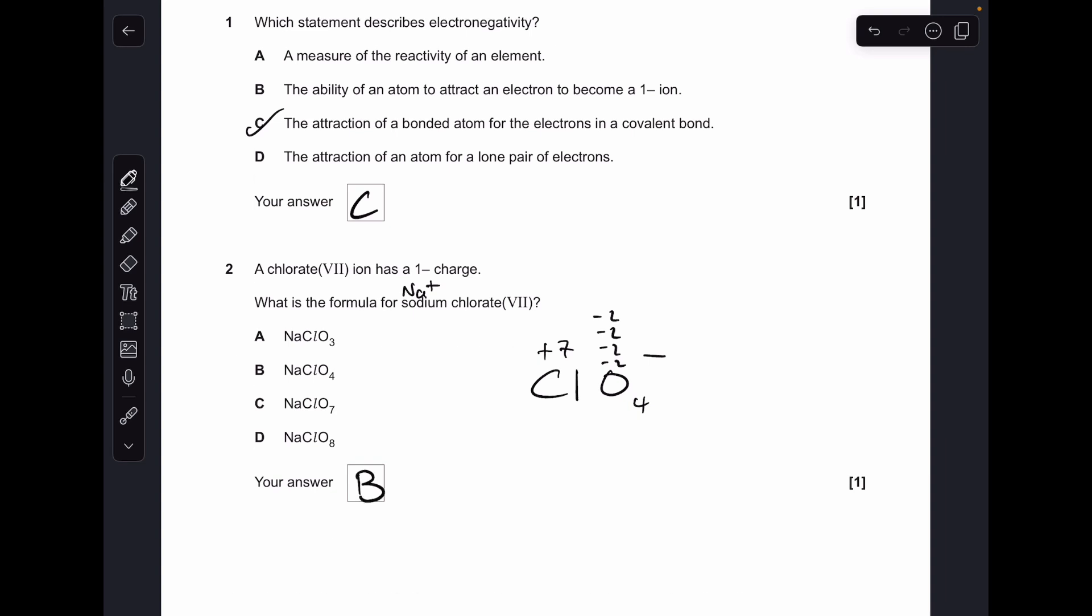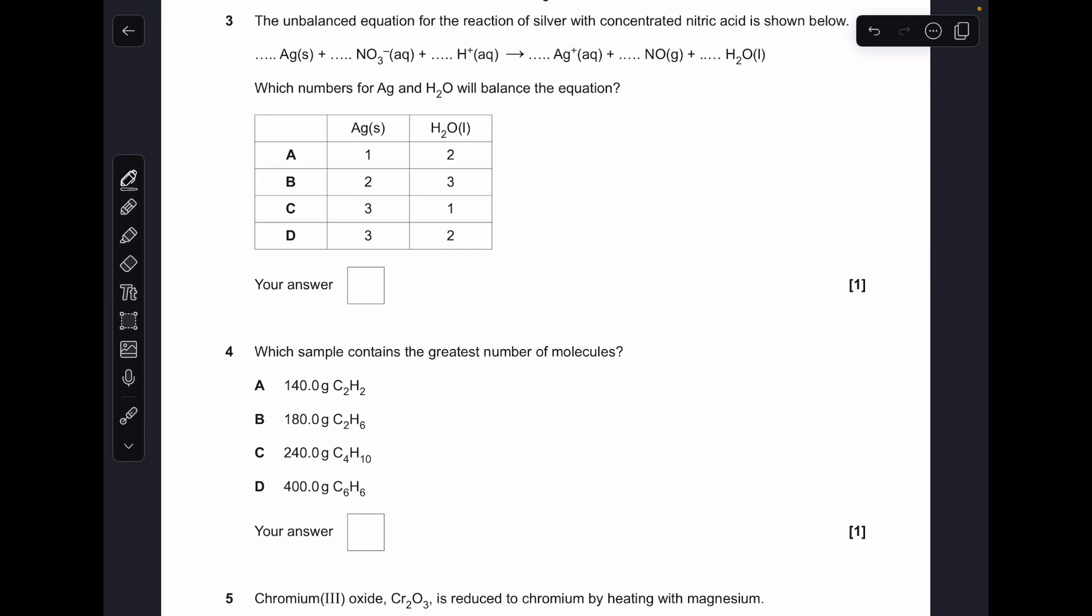So for number three, the first thing we need to do is work out the oxidation number changes. It's the silver and the nitrogen in this case. So you can see in red I've got the oxidation numbers of those atoms above the atom. The change for silver is zero to plus one, nitrogen is plus five down to plus two. So the rule is we need to have the overall changes being the same, so that means we need threes in front of the silver species.